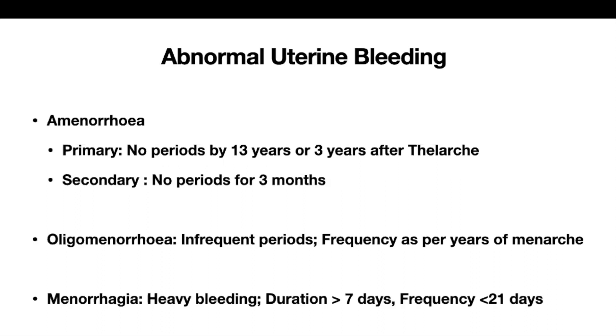Coming on to menorrhagia — menorrhagia is heavy menstrual bleeding. If the duration of bleeding is more than seven days, or if the frequency is less than 21 days, it is menorrhagia.